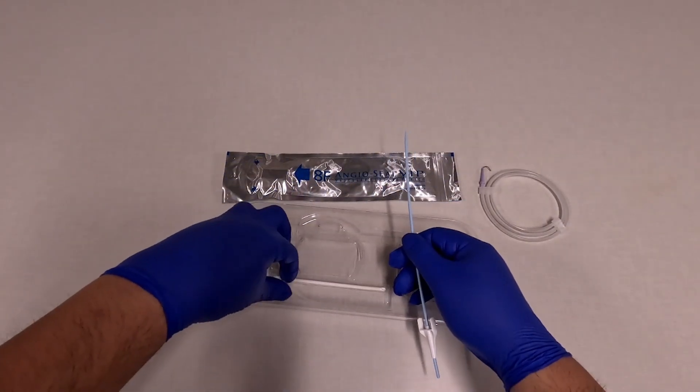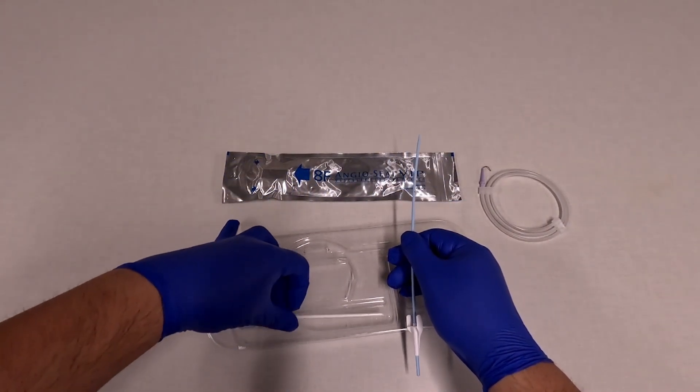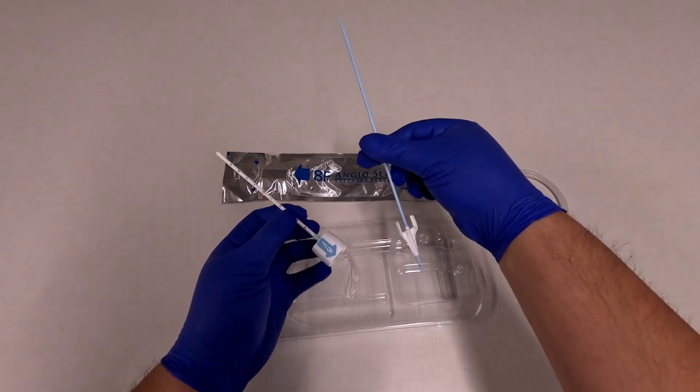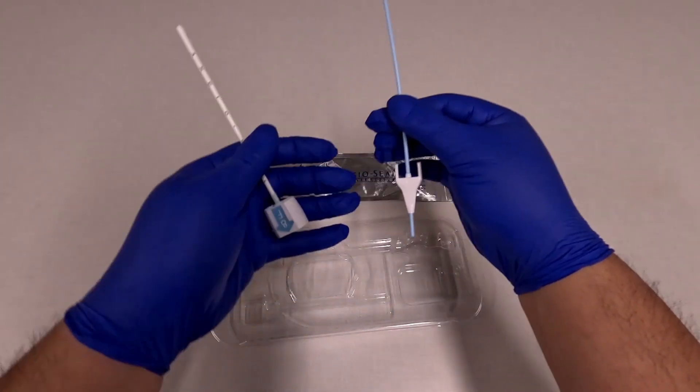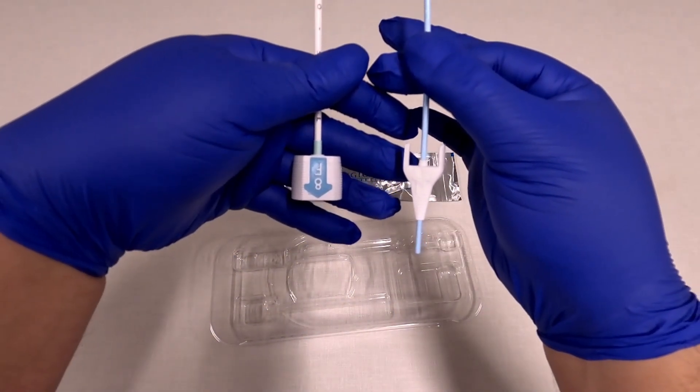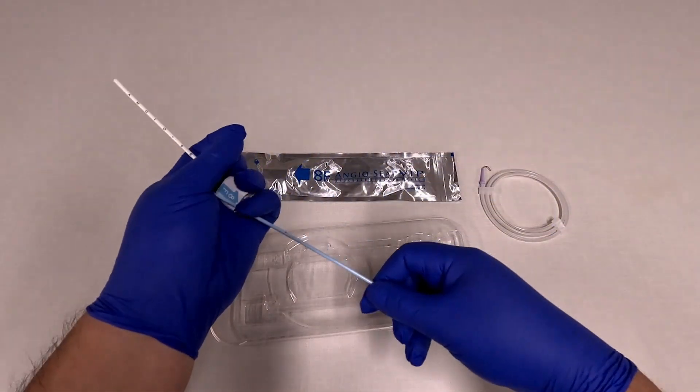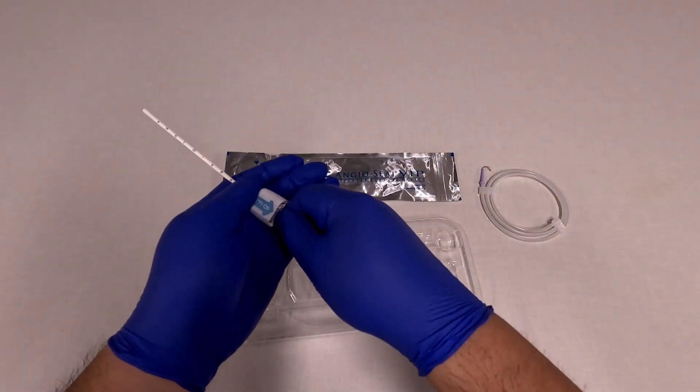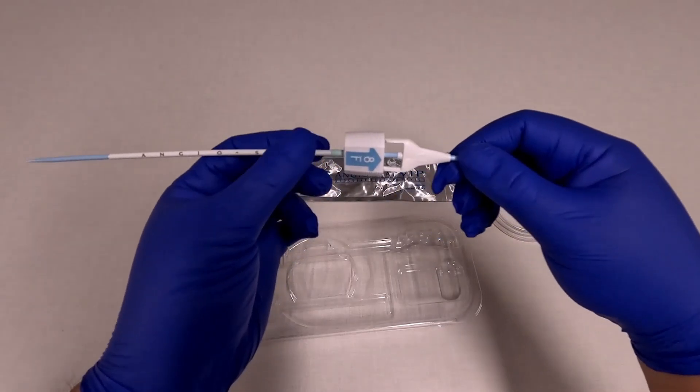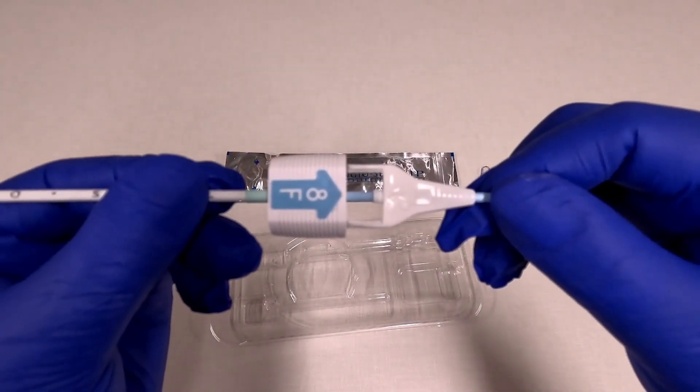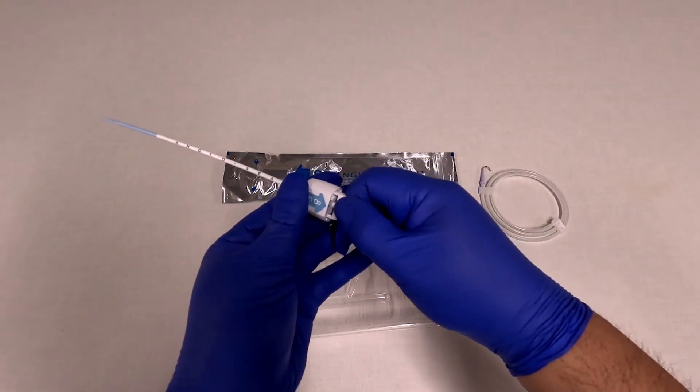The arteriotomy locator comes in two separate pieces. You put this together by attaching arrow to arrow and making sure that it clicks. So insert it like this and then line up the arrows. And then you keep pushing until you either feel or hear the click.